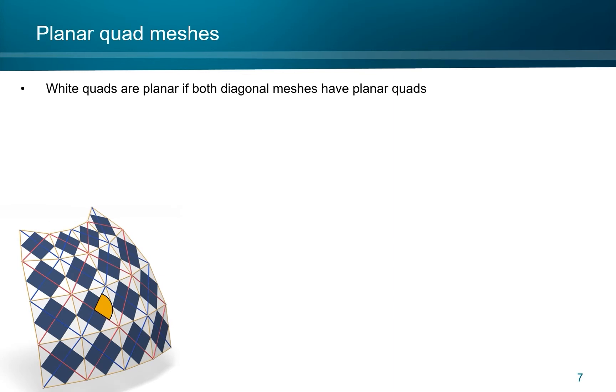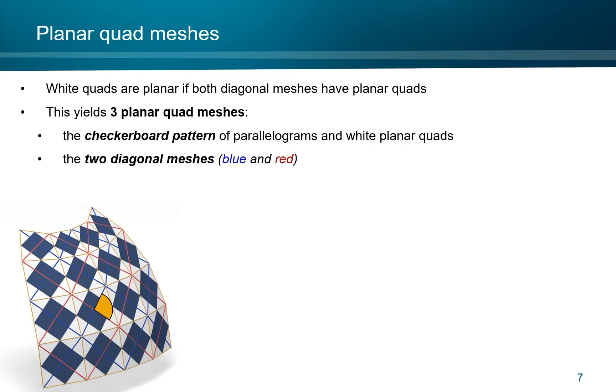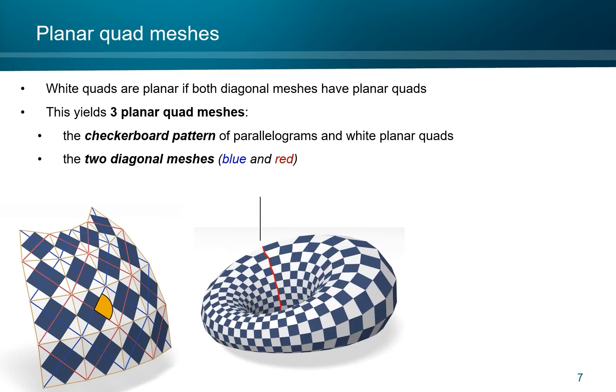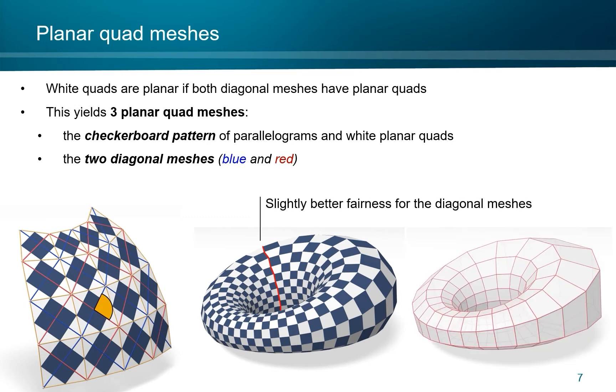Therefore, we obtain planar quads in a checkerboard pattern if both diagonal meshes have planar quads. The parallelograms are of course planar anyway. So this gives in total three planar quad meshes: the checkerboard pattern and the two diagonal meshes. The checkerboard pattern may lack a little bit in fairness, as shown here, but with appropriate fairness terms, the diagonal meshes do not suffer from fairness.